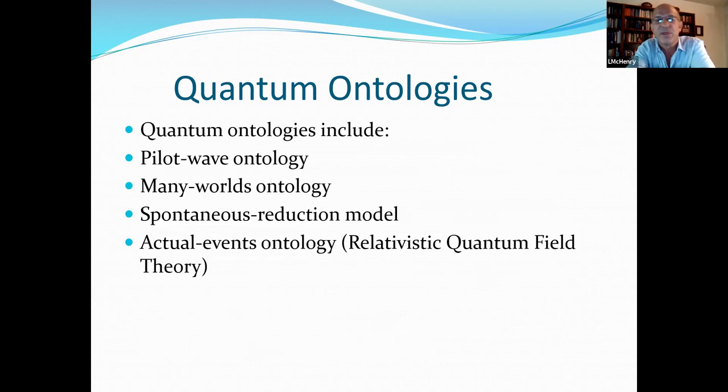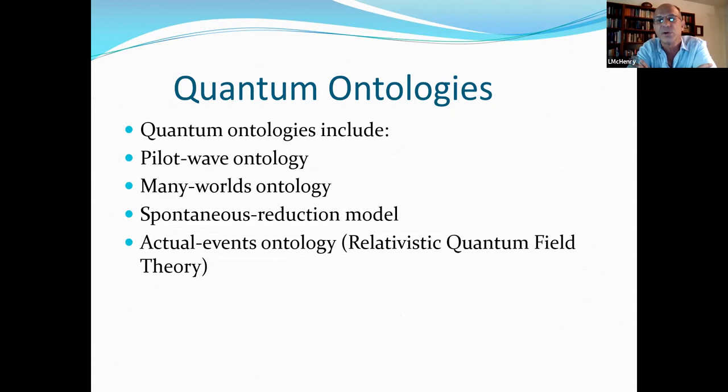So, if we reject the orthodox Copenhagen theory and move in the direction of taking ontology seriously, it looks like physics has advanced at least four different candidates here for an ontology of quantum mechanics. It includes the pilot wave ontology, the many worlds ontology, spontaneous reduction, and the actual events ontology, that is the relativistic quantum field theory. So, I'm just going to focus on the actual events ontology because that's the one that it looks like gives us the best possibility of revising this concept of time to achieve some potential unification.